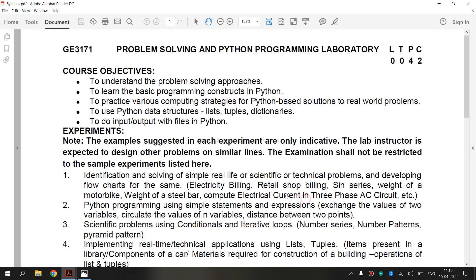Now, let's see what is the electrical current in three-phase AC circuits. A three-phase system consists of three voltage sources connected to loads by three or four wires. A three-phase system is equivalent to three single-phase circuits. The voltage sources can be either star connected or delta connected.